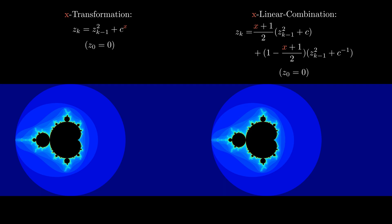We will now slowly change x from 1 to minus 1 and see how the different inversion processes look.